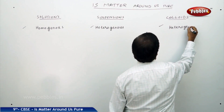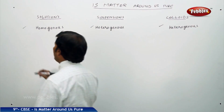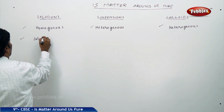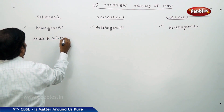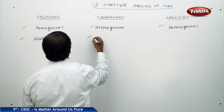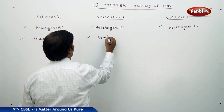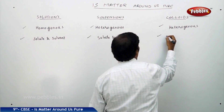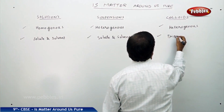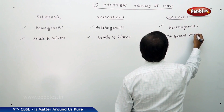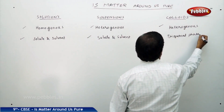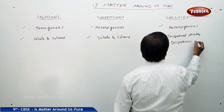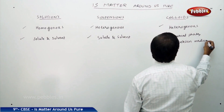In true solutions, the components are solute and solvent. In suspensions, the components are also solute and solvent. But in colloids, the components are called dispersed phase and dispersion medium.